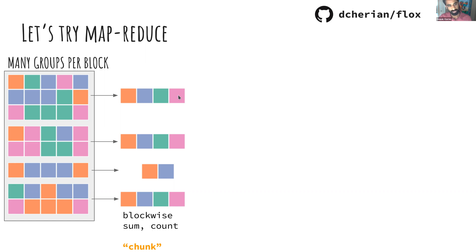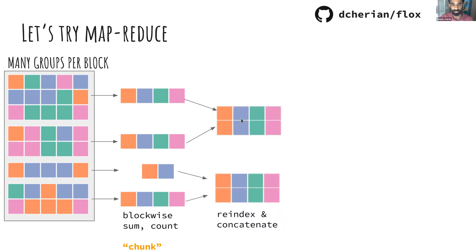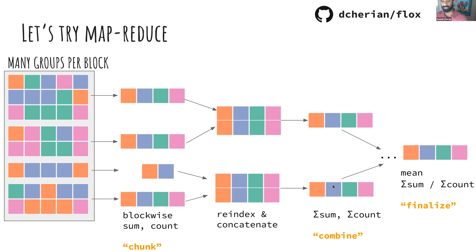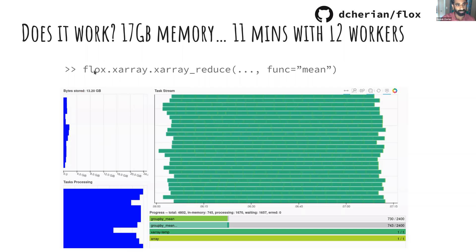Then take those intermediate results, combine a subset of them, and group-reduce again to form another intermediate — you keep going depending on how many blocks you have. At the end, for each group you have the sum and the count, divide the two, and you have the mean. The task graph looks really clean. If you use the `xarray_reduce` function in this package, which implements map-reduce by default, it works really well.